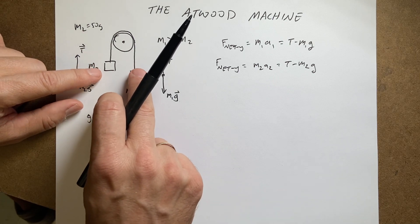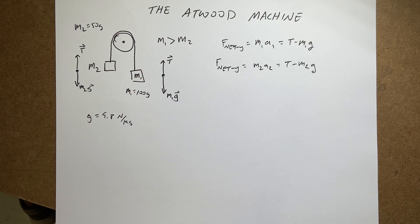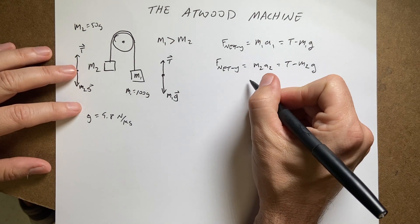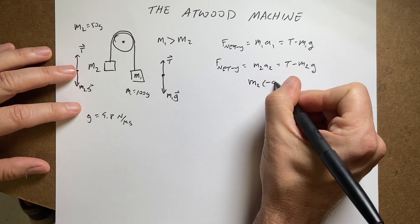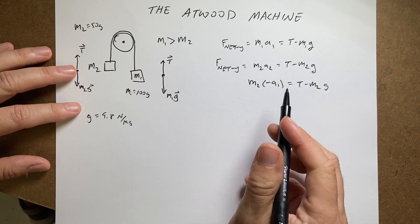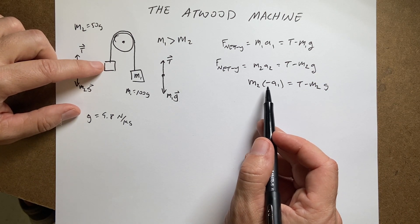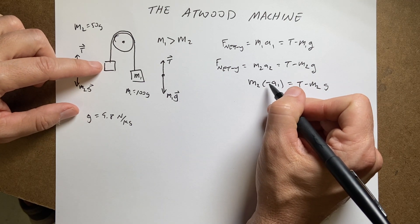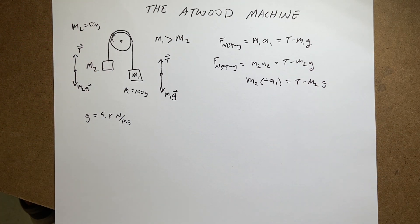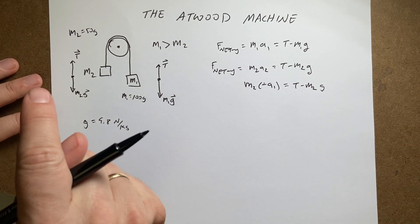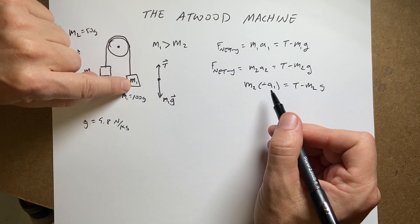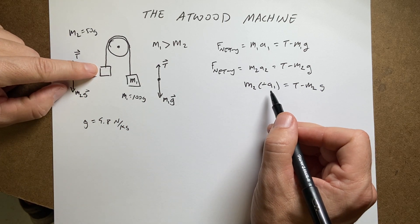So because the string is perfect and doesn't stretch, the displacement of this in the negative y direction would be the same displacement as that in the positive y direction. So they'd have to have equal and opposite y velocities. If they have equal and opposite y velocities, they have to have equal and opposite accelerations. So I'm going to rewrite this as m2 times negative a1 equals T minus m2 g. So the acceleration of this one has to be negative of that one. Because this one's going to actually have a negative acceleration. So this is going to actually be negative of a negative, which is positive.